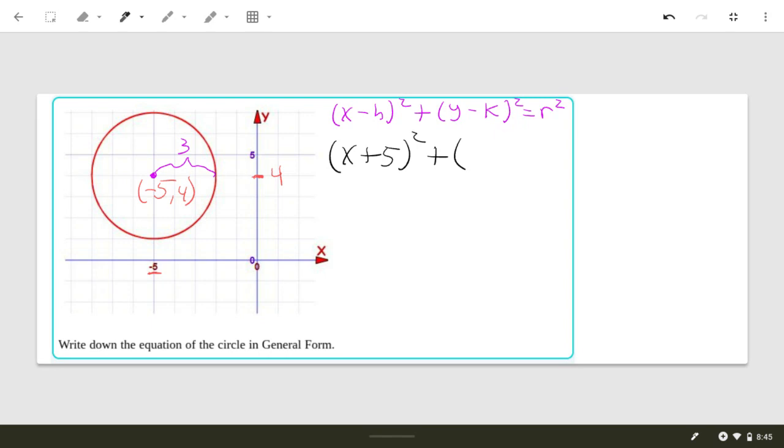Plus, and then for the y, we're going 4 units up. So that's going to be y minus 4. Again, it's in parentheses, so it's the opposite of what you think.